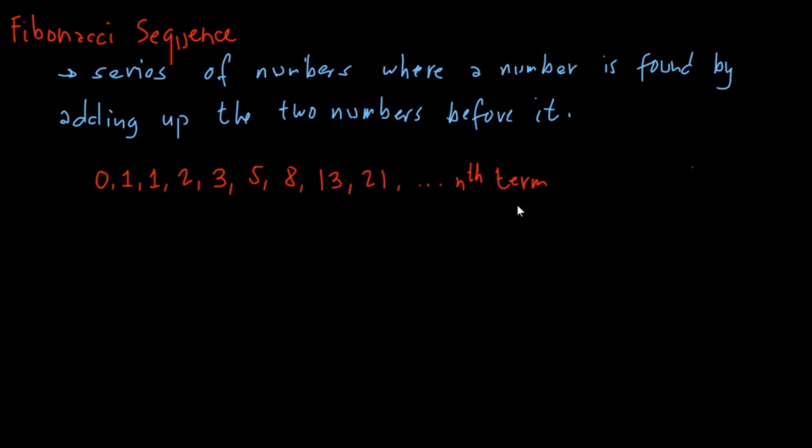To get the nth term, we have a formula. F of n, the nth term of the Fibonacci sequence, is equal to one over square root of five, times one plus square root of five over two, raised to the power of n.